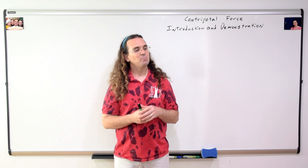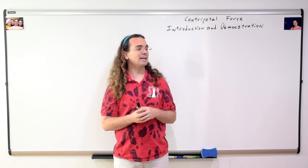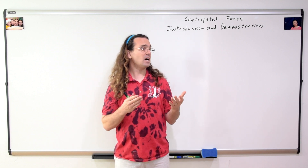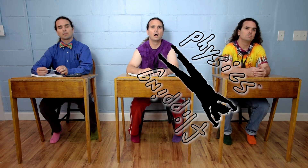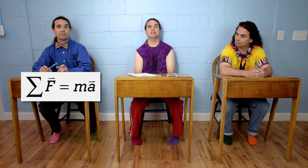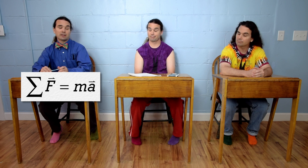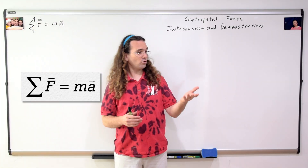Mr. P.: Good morning. Billy, what is the form of Newton's second law which does not include momentum? That is net force equals mass times acceleration, where both force and acceleration are vectors. Mr. P.: Correct.